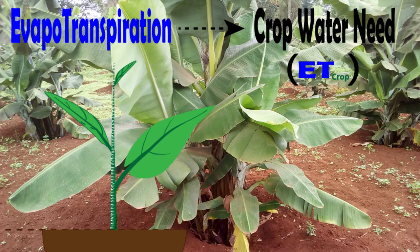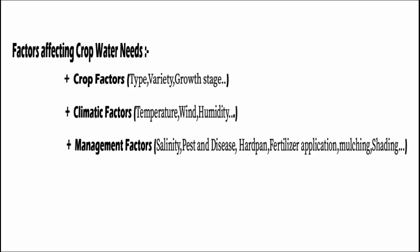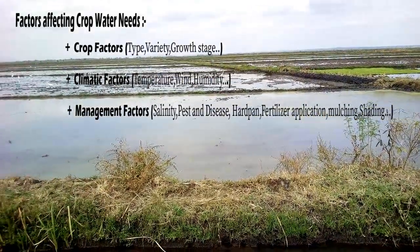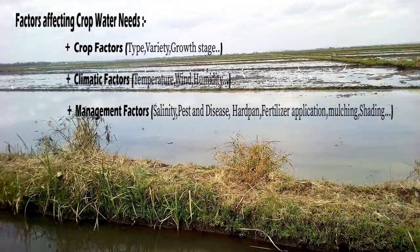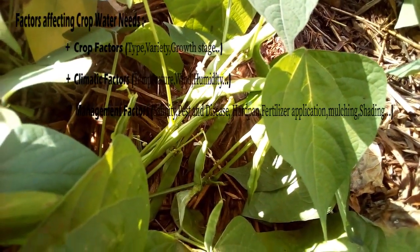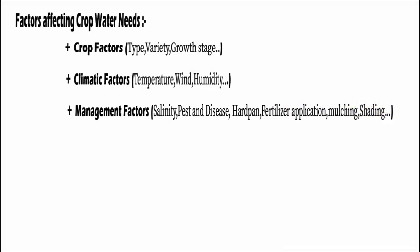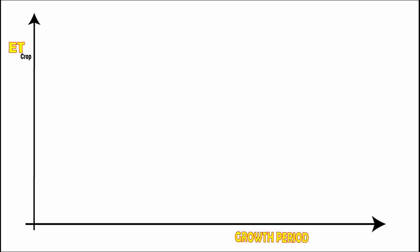The water lost by a plant during growth is called the crop water need, commonly abbreviated as ET crop. You can think of it as the amount of water needed to meet the water loss by evapotranspiration. As a farmer you should know that crop water need depends on many factors, like the crop type — rice will obviously need a lot more water compared to beans, while plants like purslane will just die in waterlogged conditions. The growth stage of a crop also affects crop water need.